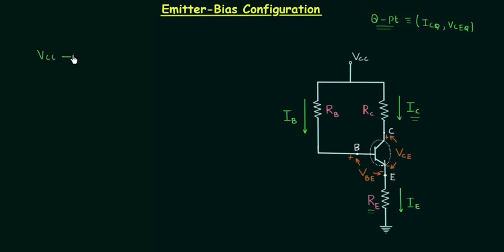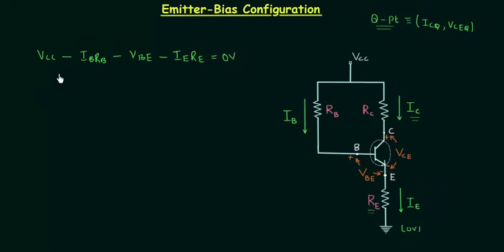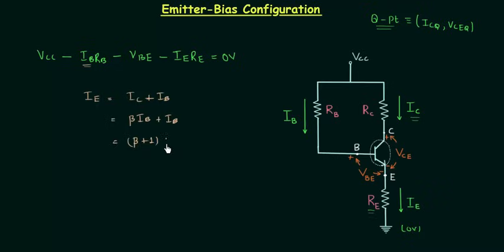To calculate ICQ, the collector current, we apply KVL in the input loop. So we have: VCC minus drop across RB, which is IB·RB, minus VBE, minus drop across RE, which is IE·RE, equals zero. We know that IE equals IC plus IB, and IC equals β·IB, so the emitter current is simply equal to (β + 1) times the base current.